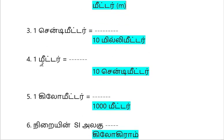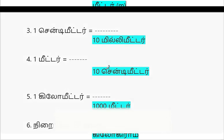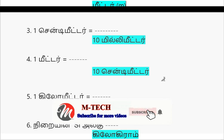Next, 4th question. 1 meter is equal to dash. Answer 1: 10 centimeter.